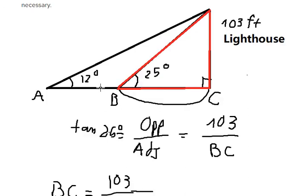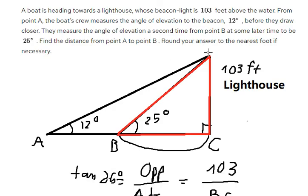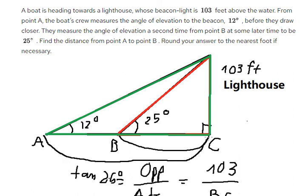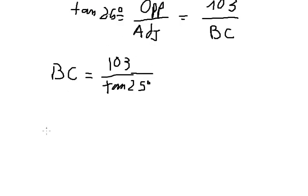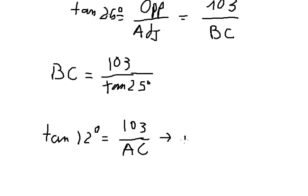Now, after we find BC, we concentrate on the other triangle. We need to find the distance AC. We have 12 degrees and the height of 103. Applying the same formula, we get AC equals 103 over tan(12 degrees).